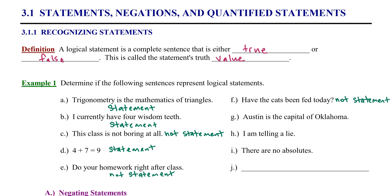Example G: Austin is the capital of Oklahoma. When you read that statement, your head starts shaking — Austin is the capital of Texas, not Oklahoma. But that is a statement; it just happens to be a false statement. Remember, we're not trying to determine if these are true or false and make that the conclusion — we're trying to determine if these are statements. If it has a truth value, then it is a statement. This one is a statement; it just happens to be a false statement.